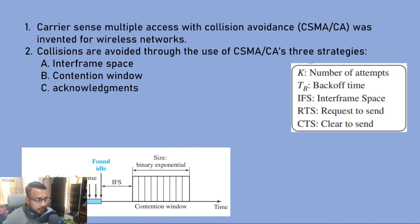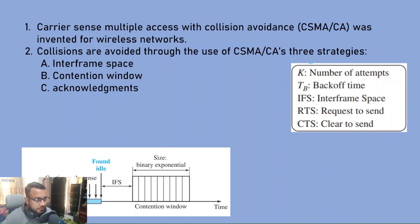CSMA — carrier sense multiple access with collision avoidance — was invented for wireless networks. CSMA multiple access has three different strategies: one-persistent, zero-persistent, and P-persistent. CSMA/CA collision avoidance uses the same type of strategy.